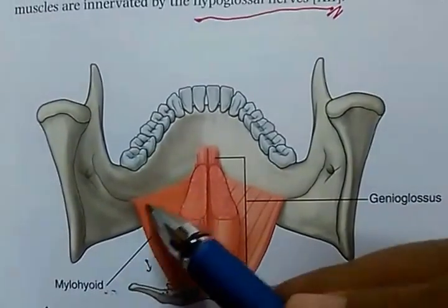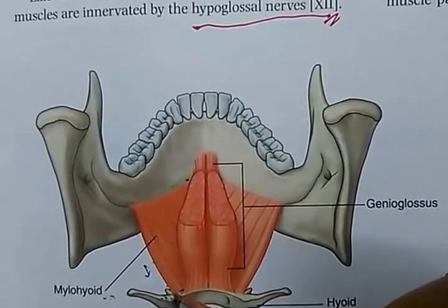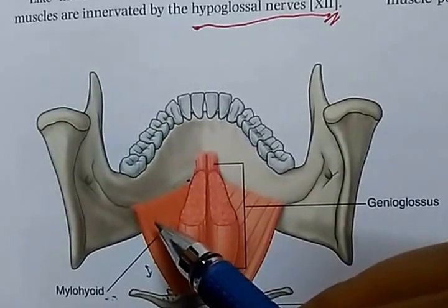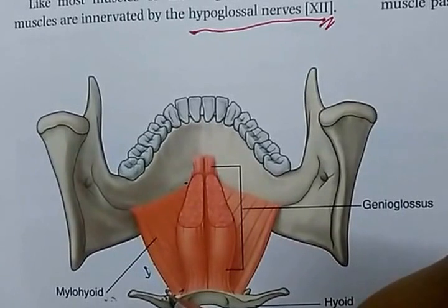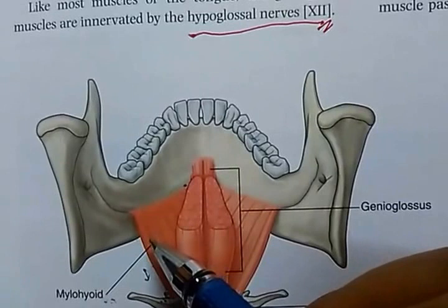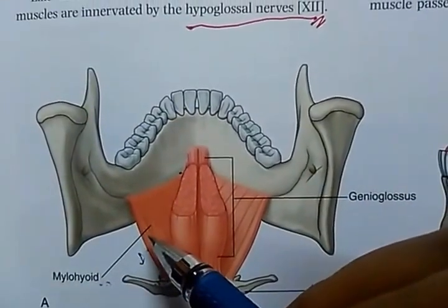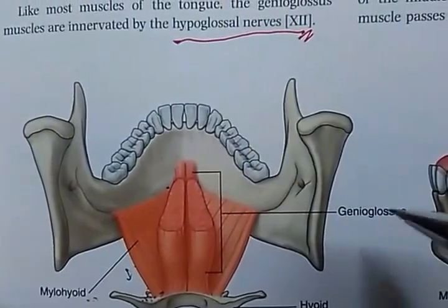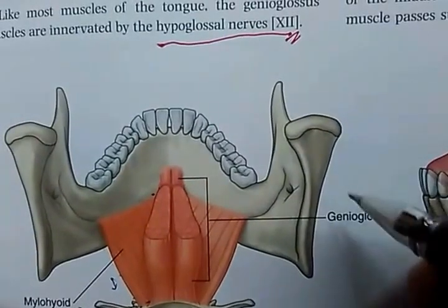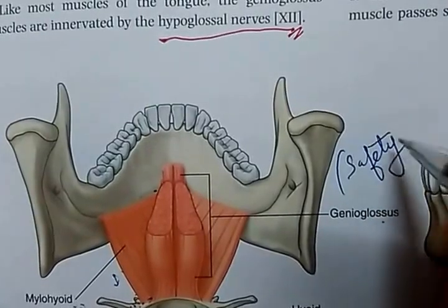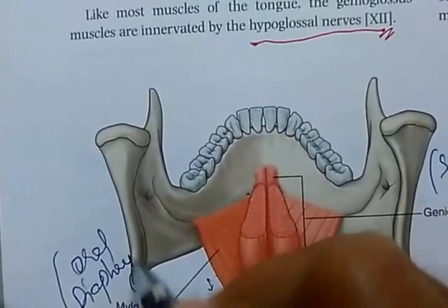To summarize: mylohyoid — the oral diaphragm — originates from the mylohyoid line of the mandible and inserts into the median fibrous raphae and the body of the hyoid bone. Its actions are: it supports and elevates the floor of the oral cavity; if the mandible is fixed, it pulls the hyoid forward; if the hyoid is fixed, it depresses the mandible. Innervation is via the nerve to mylohyoid, a branch of the inferior alveolar nerve, which is a branch of the mandibular nerve (V3 of the trigeminal nerve). Also note: genioglossus is the safety muscle of the tongue, and mylohyoid is the oral diaphragm.